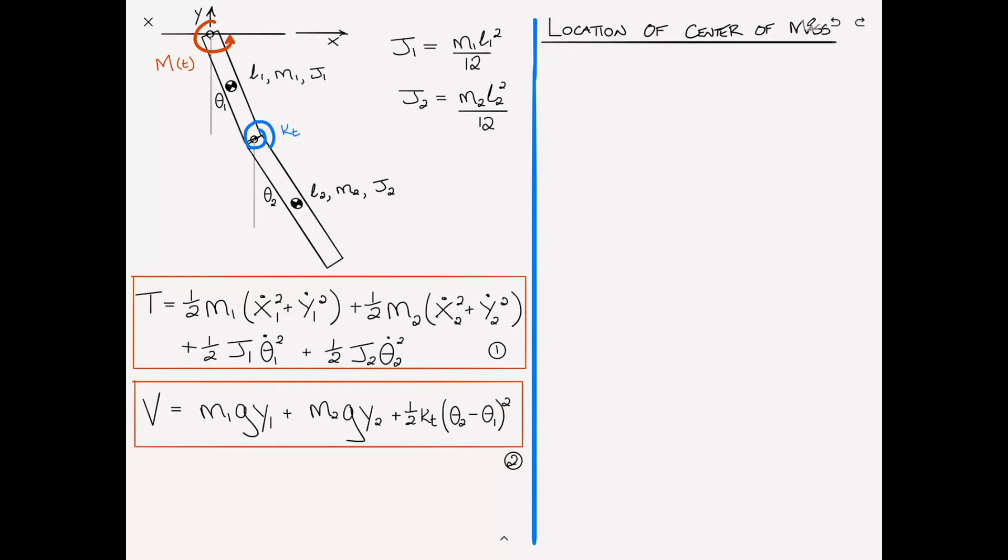Looking at mass number one, we can see that the x coordinate is just this position here: it's l1 divided by 2 times sine of theta. Similarly, the y coordinate is l1 divided by 2 cosine of theta, but it's in the negative direction because y is positive upwards. Then for mass 2, we recognize that we've got to get all the way out here, and then it's a distance from there.